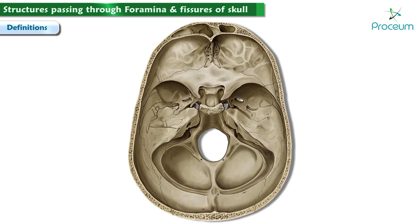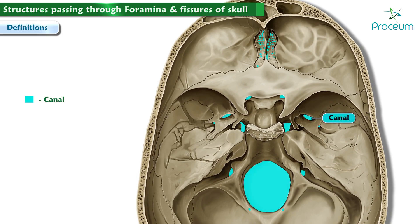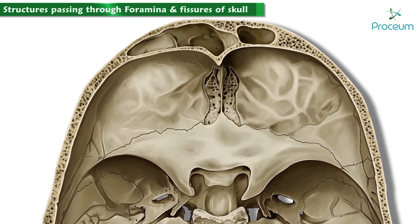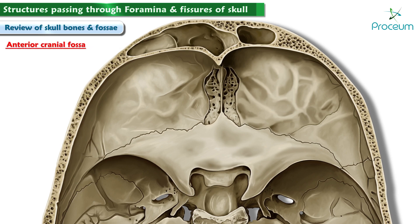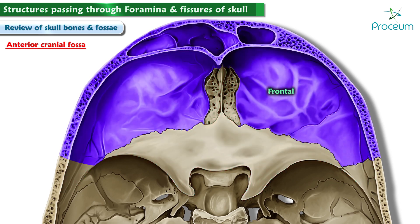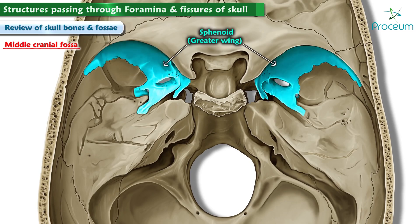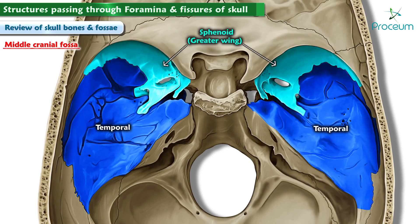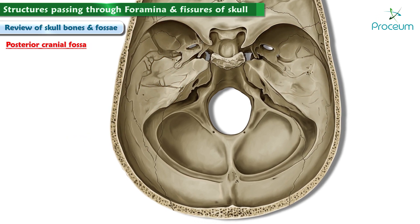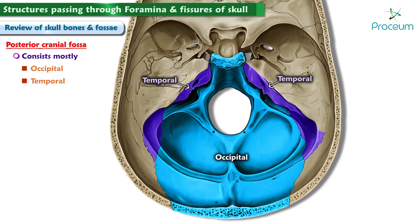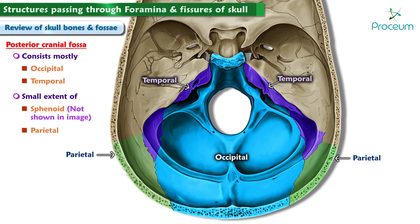Also considered to be types of holes in the skull are structures with canal, hiatus, or meatus in their name. Before the lecture on foramina and fissures, let's quickly review the bones and fossae of the anterior floor of the skull. The anterior cranial fossa is made up of parts of the frontal, ethmoid, and sphenoid bones. The middle cranial fossa consists of parts of the sphenoid, temporal, and parietal bones. The posterior cranial fossa consists mostly of the occipital and temporal bones, and to a smaller extent the sphenoid and parietal bones.